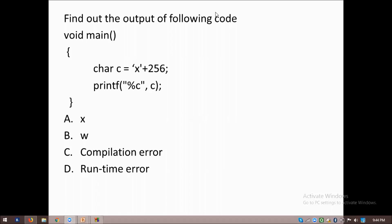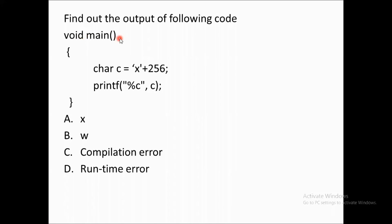Let's find the output of the following code. Starting with the main function, the first line says: character C equals 'x' plus 256. Here, x is a character and 256 is an integer value. The question is: can you add a character and an integer value and get a character result? Yes, that is possible.